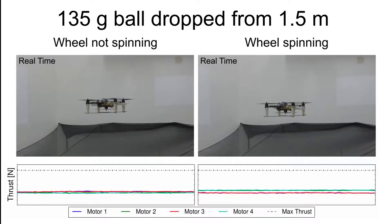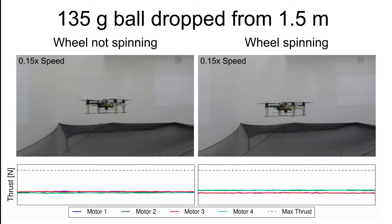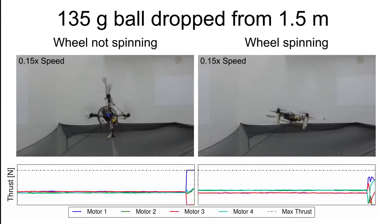Shown here, a disturbance is applied to the system by dropping a ball on the vehicle from above. The impact results in the vehicle crashing when the wheel is not spinning.